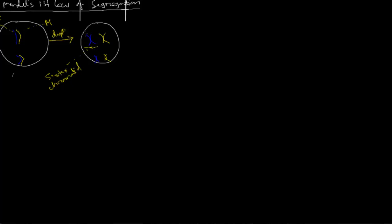These two together are called homologous chromosomes. During the first meiotic division, these homologous chromosomes become separated. If I draw a line here, the separation will be something like this.